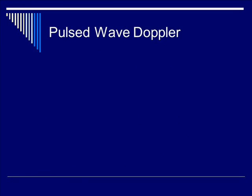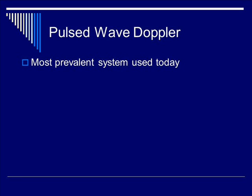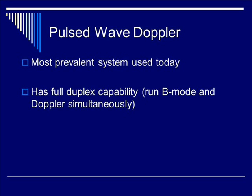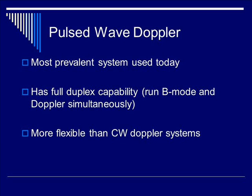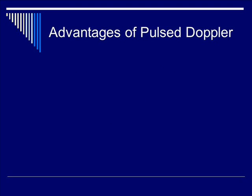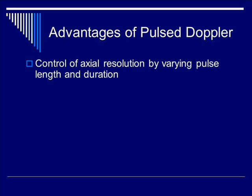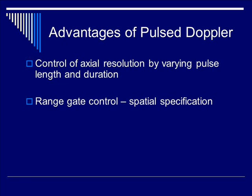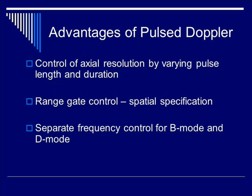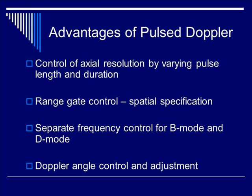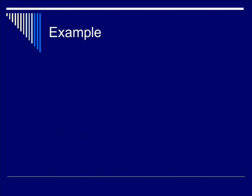Now let's talk about Pulse Wave Doppler. It is the most prevalent system used today. It has full duplex capability, meaning it can run B mode and Doppler simultaneously. It's more flexible than continuous wave Doppler systems. Advantages include: you can control axial resolution by varying pulse length and duration, control the gate range and specify the spatial volume, separate frequency control for both B mode and D mode, and the Doppler angle can be adjusted, allowing you to operate power Doppler versus regular Doppler.